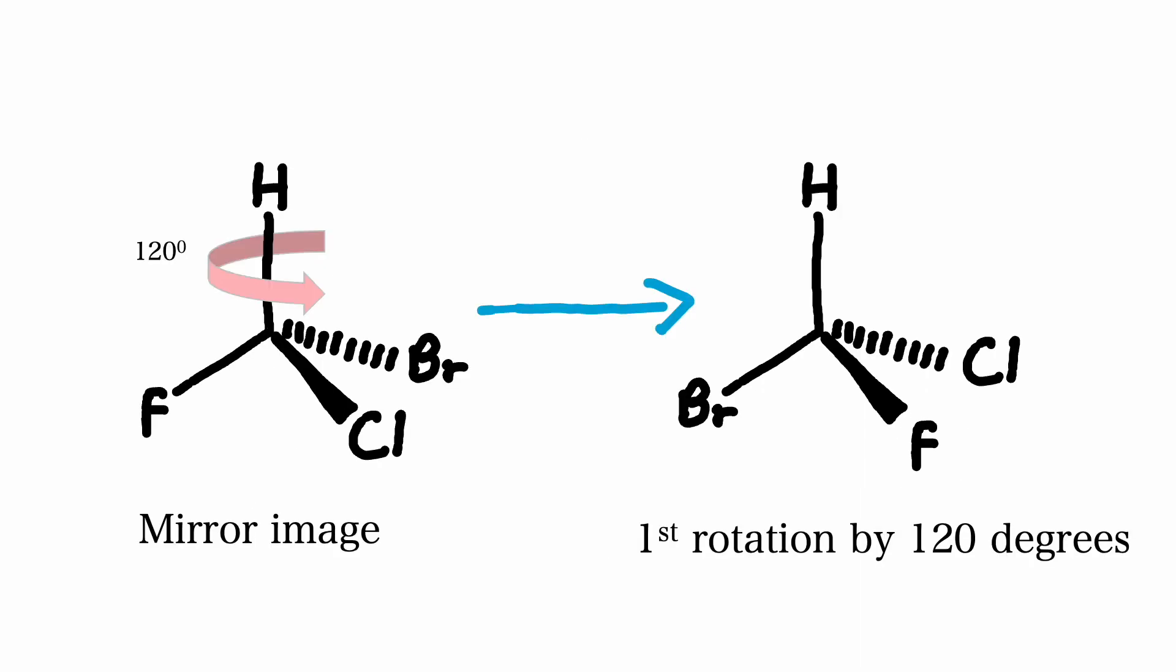First, let's rotate the mirror image of the molecule by 120 degrees. We see that chlorine moves into the page, fluorine comes out of the page, and bromine is on the plane of the page.